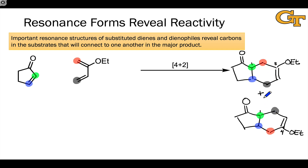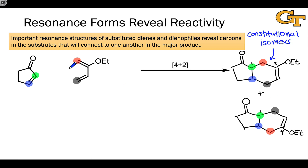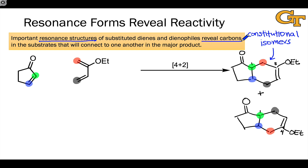The question becomes: which of these two is the major product? These two possible products are constitutional isomers, so we should expect them to have very different properties, and one will predominate. To make this prediction, the key is understanding that the donating and withdrawing groups in the diene and dienophile polarize those substrates and create sites of significant positive and negative charge. These oppositely charged sites will tend to bond to one another. To find those sites of opposite charge, we can use resonance structures — particularly when resonance donating and withdrawing groups are present, which is the norm. By drawing alternative resonance forms, we can see where positive and negative charges are located, and these are the carbons that will connect to form the major product.